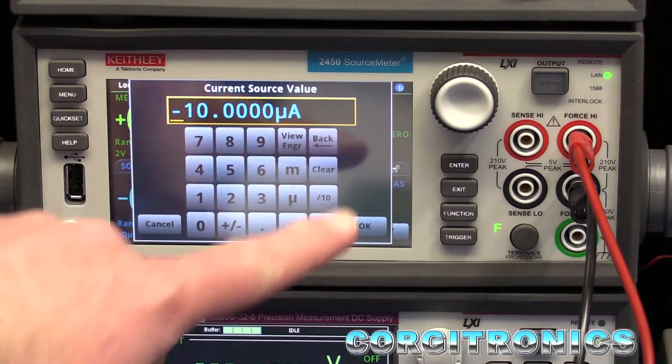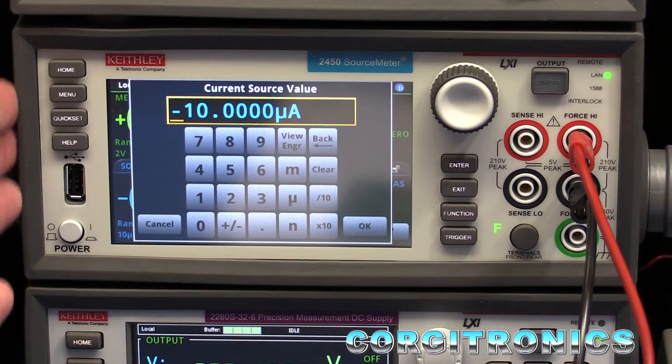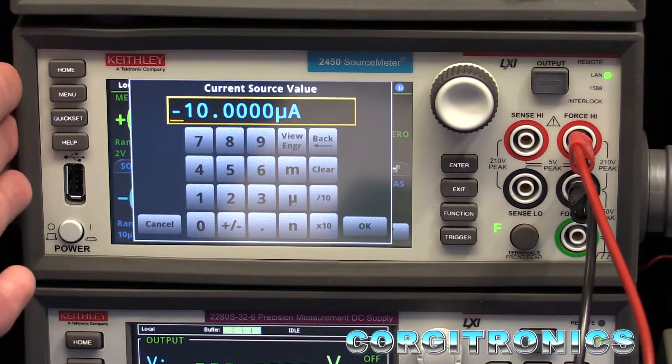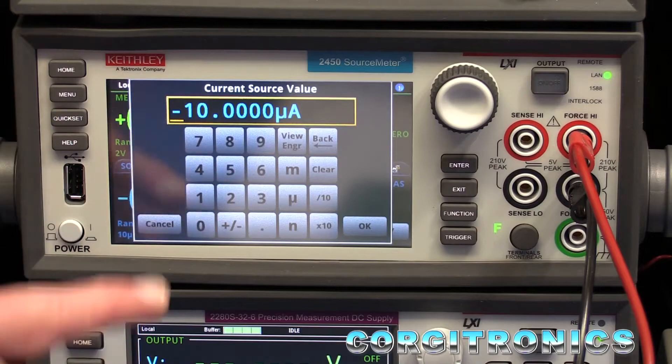What does that do? That turns this into a high precision load. A source meter is a four quadrant device - it can source current, source voltage, and it can also act as a voltage or current drain. That's what we're going to do today as a load.